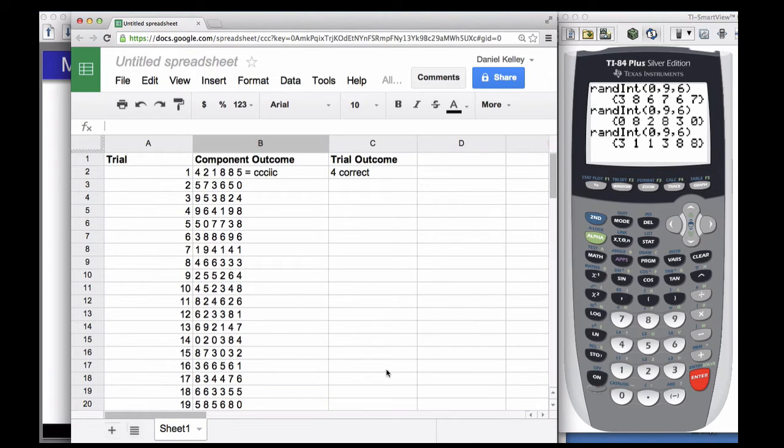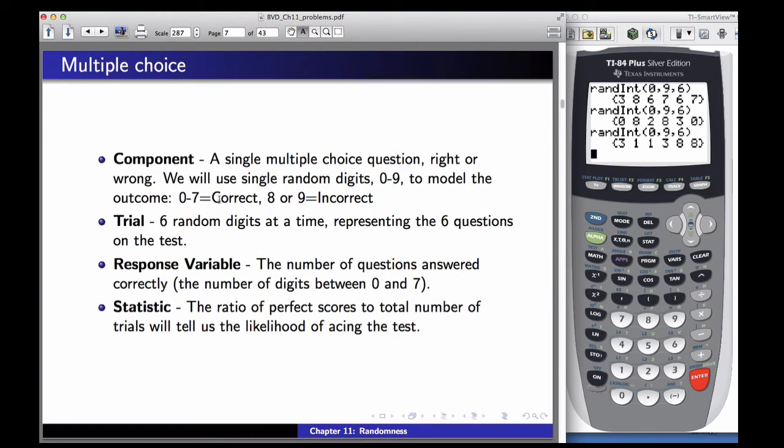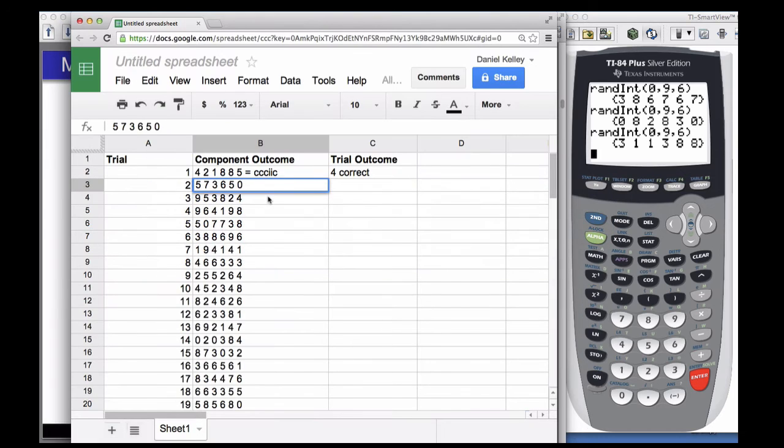Okay, I kind of got on a roll there entering my component outcomes. So I just went through and entered all of those random digits before analyzing even the trial outcome. Now you can do whatever works best for you to make this random number generation go quicker and entering it into your table. Just make sure that you do the first one right here so that you make sure the simulation that you set up makes sense. And then from there you just do what works best for you, however you can do it quickly and efficiently.